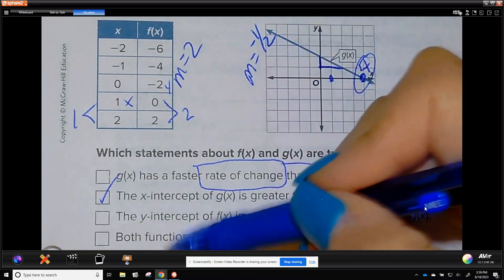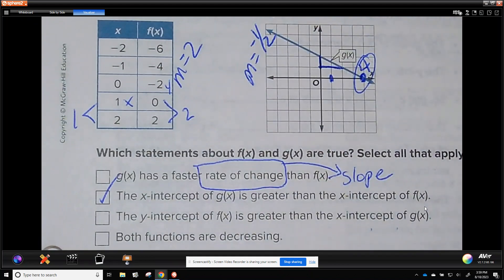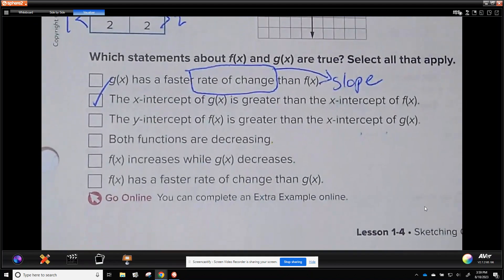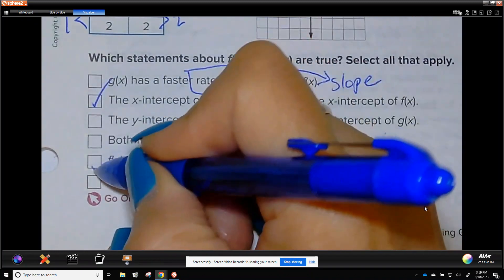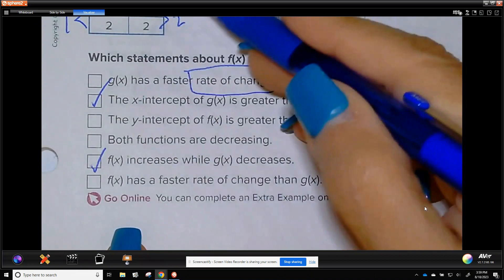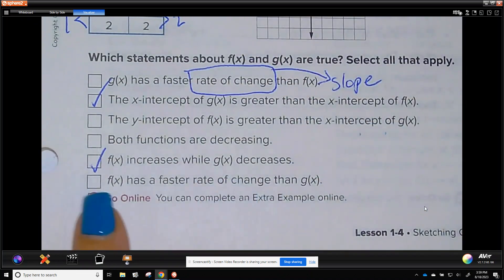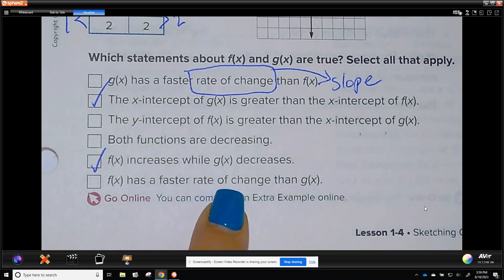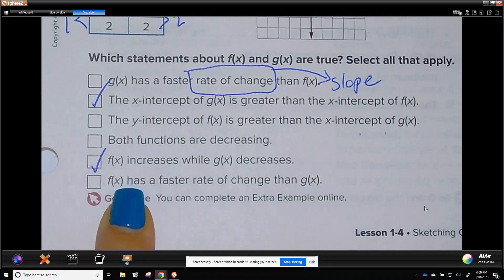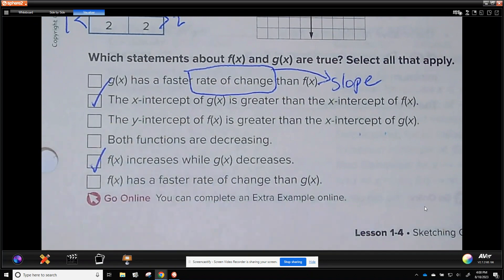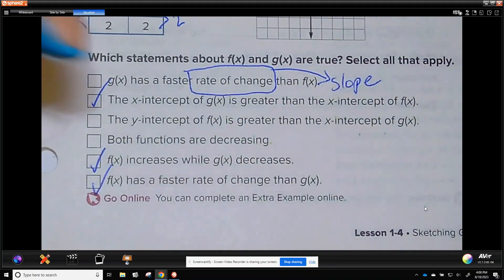Both functions are decreasing. This one's only with the negative. Not true. f of x increases while g of x decreases. That is true because f of x is positive slope, g of x is negative slope. And f of x has a faster rate of change than g of x. I'm sorry, this is the end of the day that I'm taping this. f of x has a faster rate of change than g of x. True because f of x is positive, g of x has a negative slope.